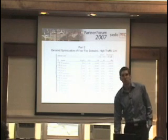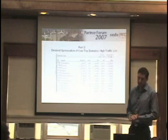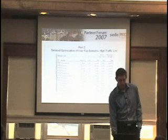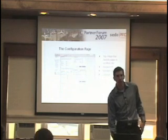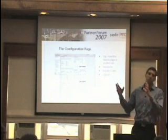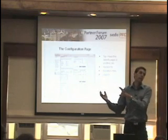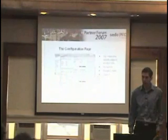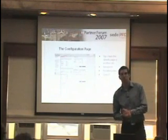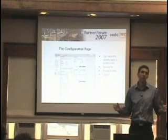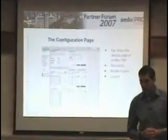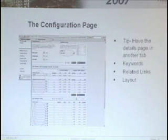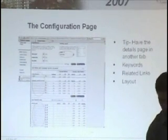Our second optimization strategy moves into detailed optimization. Sort by high traffic and then use sophisticated optimization techniques to really get the most out of your high-traffic domains. A good way to do this is to right-click the config page, open it in a new tab, and flip back and forth between your details page — where you get information about the domain — and your configuration page. On this, the most important thing to look at is related links. Ideally you've already set your layouts and photos using bulk optimization. Related links for your high-traffic domains is extremely important and has a very large impact on revenue.